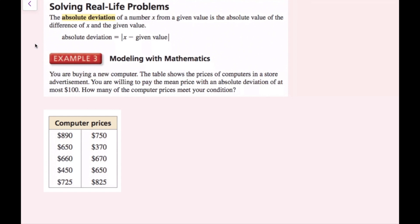In example three, you are buying a new computer. The table shows the prices of computers in a store advertisement. You are willing to pay the mean price with an absolute deviation of at most $100. We want to add up all 10 computer prices and find the mean by dividing by 10, then see how many computers fit within our given value.